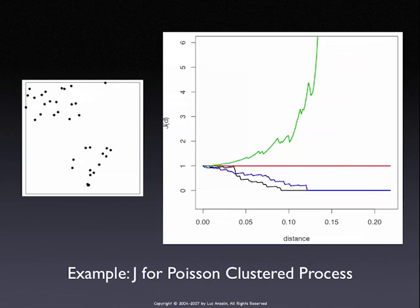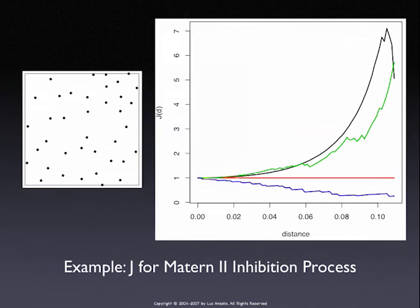The last example is the Matern process, which is more regular than usual. Here the black line starts near the edge of the randomization envelope and then breaks out for larger distances, giving some indication of non-spatial randomness in the sense of regular or inhibition patterns.